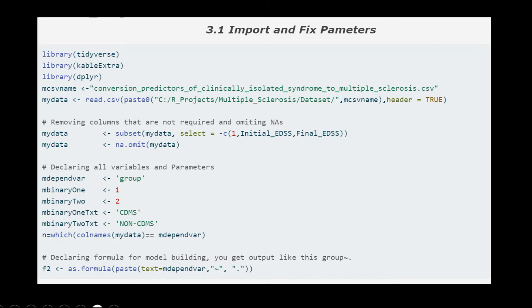Next, let's declare parameters and variables. The amazing part of the R script is here. The entire machine learning process gets fully dynamic once you declare these parameters and variables. In the RMS dataset, group is the dependent variable. The group column has two values as 1 and 2, declared as binary 1 and binary 2.